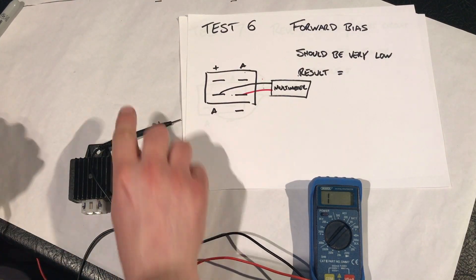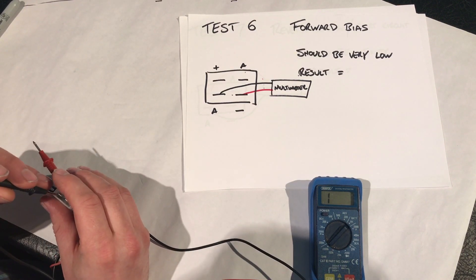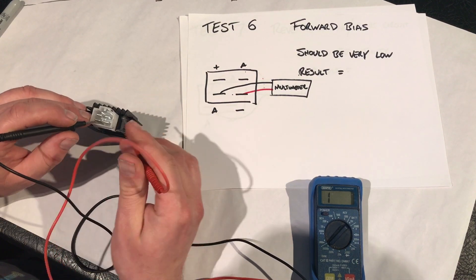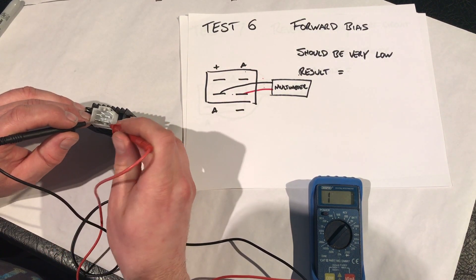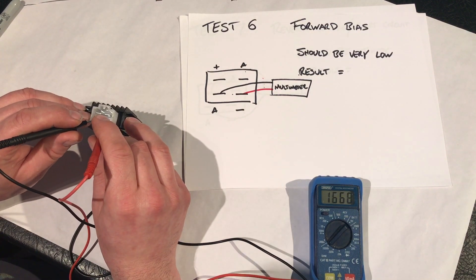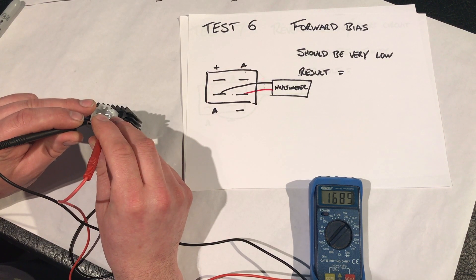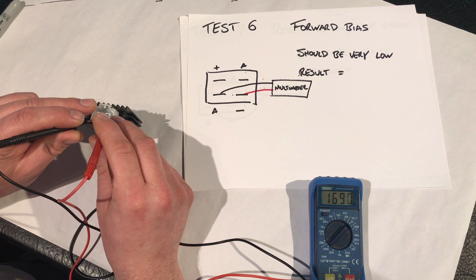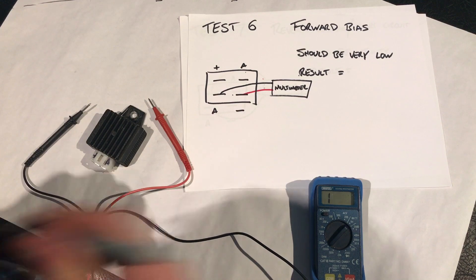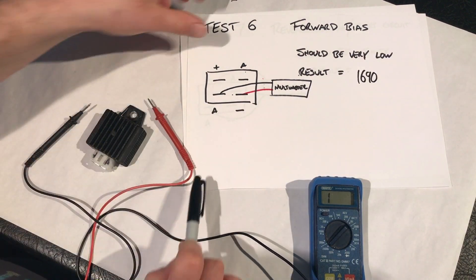And as you can see, test six. It's now a swap round to see what the forward bias is on it. So your multimeter negative onto your alternator, and multimeter positive onto the battery negative terminal. And that one's really high as well. So 166. Oh, it's going up. That can't be a good sign that it's actually getting worse as we're testing it. So 1692 we'll call it, because it just keeps rising. So 1690. I think that's a fail.